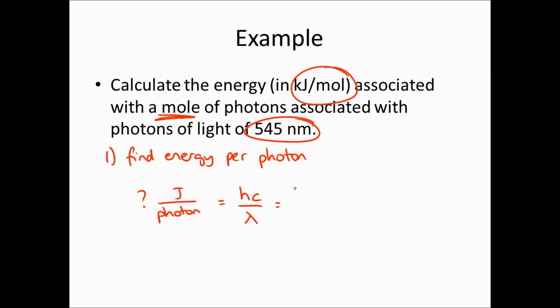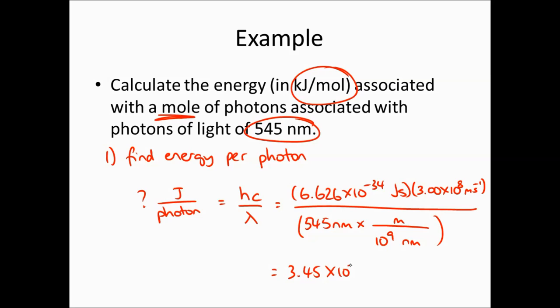This is h, Planck's constant, 6.626 times 10 to the minus 34 joules seconds. c is the speed of light, 3.00 times 10 to the 8 meters per second, divided by the wavelength, which needs to be converted to meters. That's 545 nanometers, and there are 10 to the 9 nanometers in a meter. We get 3.45 times 10 to the minus 19 joules per photon.